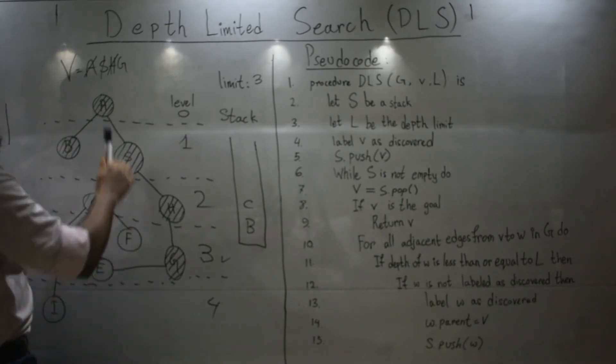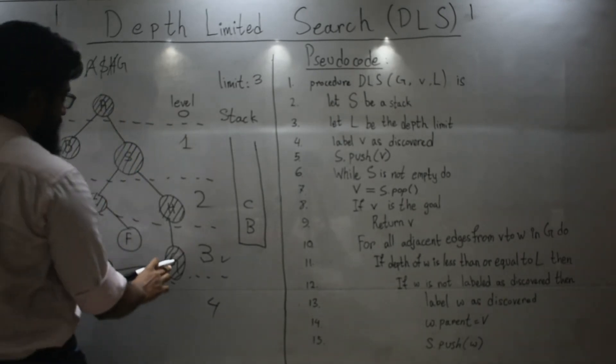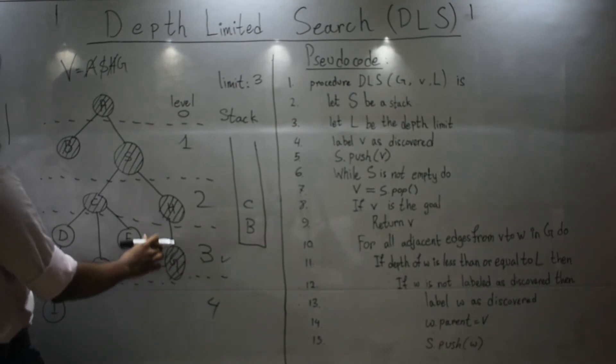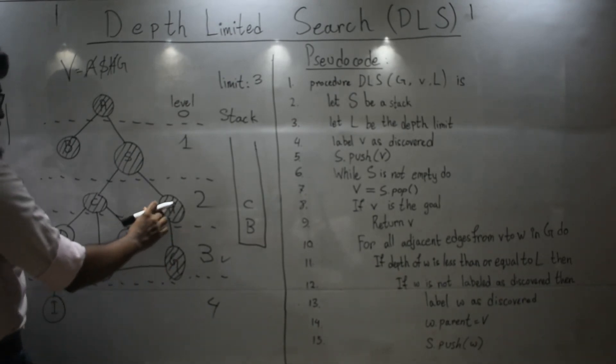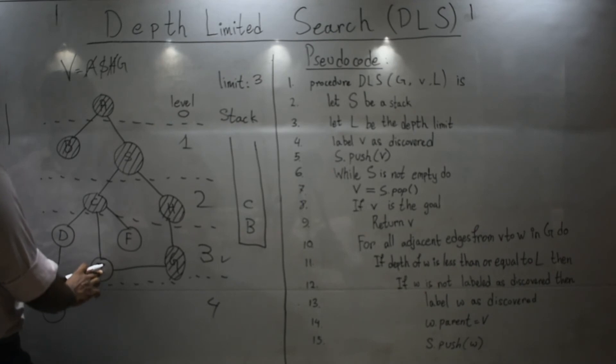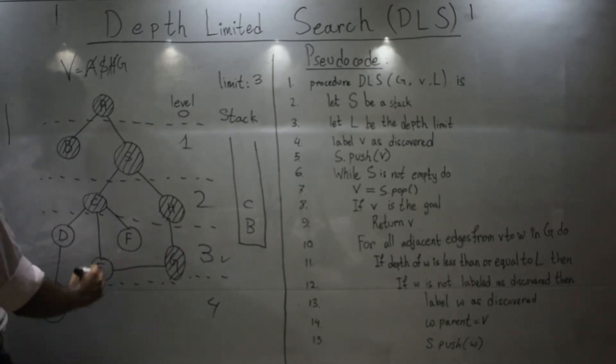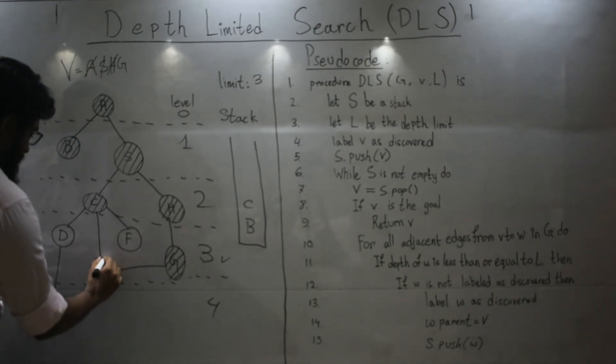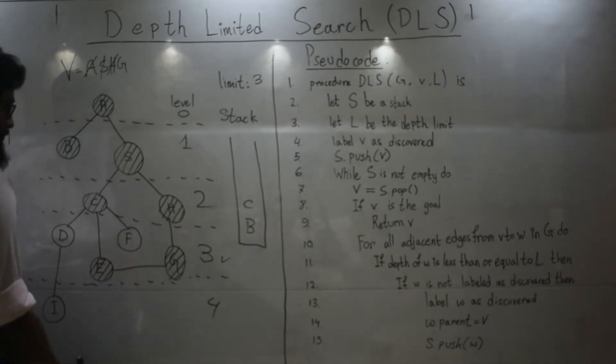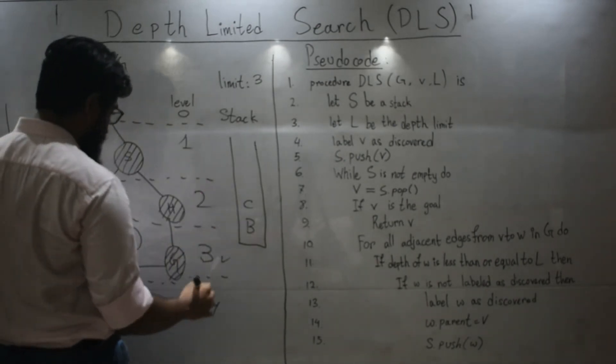Now let's look at G. The neighbor of G is H and E. E has not yet been visited. And it's also within the limit. So let's visit them. And push.